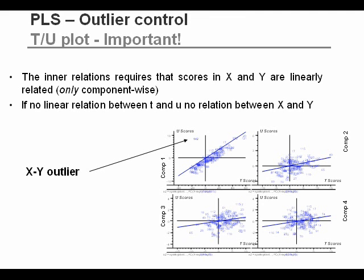Here we see a plot of scores in X and scores in Y for components 1, 2, 3, and 4. The first thing to note is that there is a very nice linear relationship in component 1, but we also have an outlier there — one sample notably away from all the others, and clearly something must be wrong with it. It's not wrong with respect to X because its score values are not extreme in X, and not extreme in Y either, but it's the relation between those. So that could be, for example, a labeling mistake — the Y values are right, but they are not from that sample.